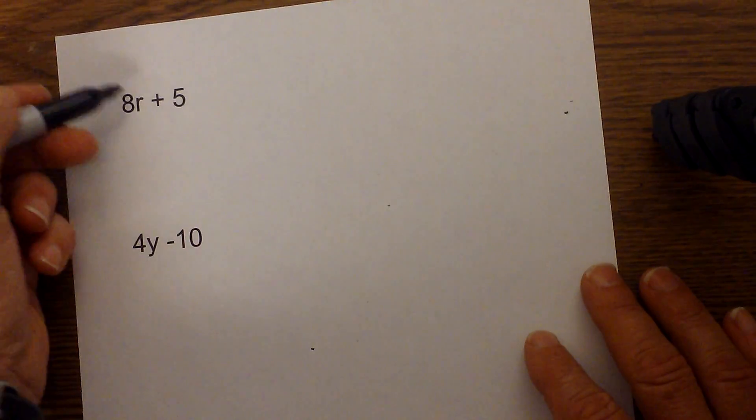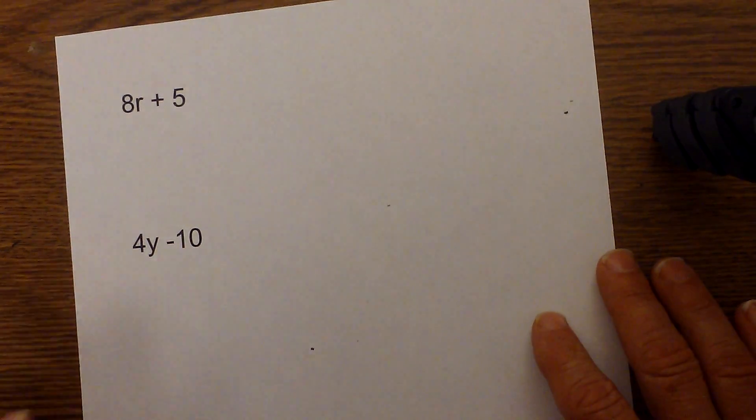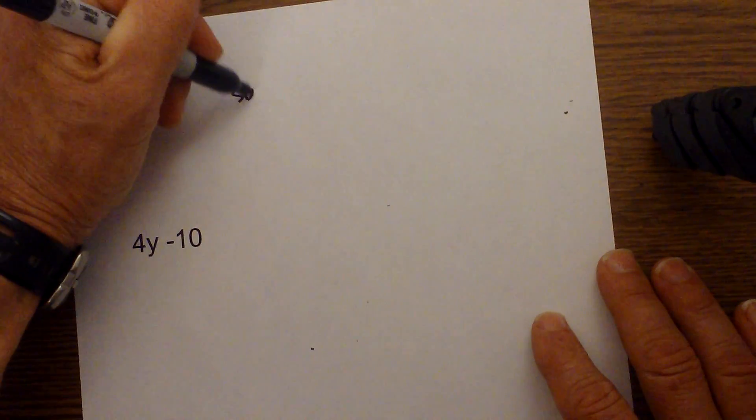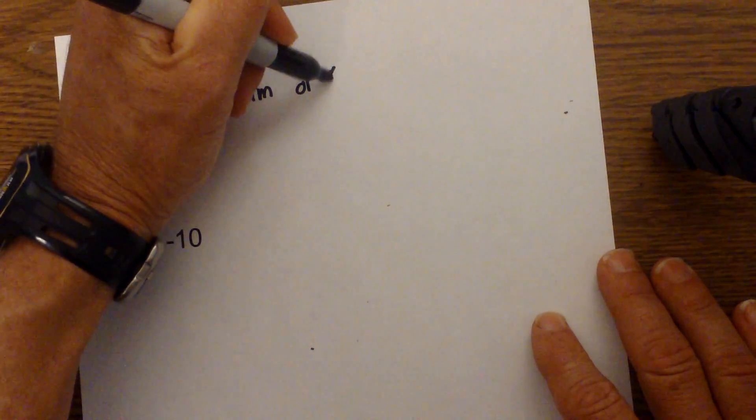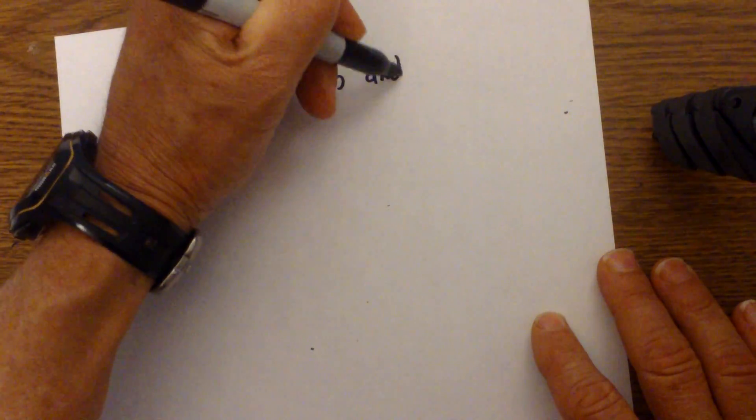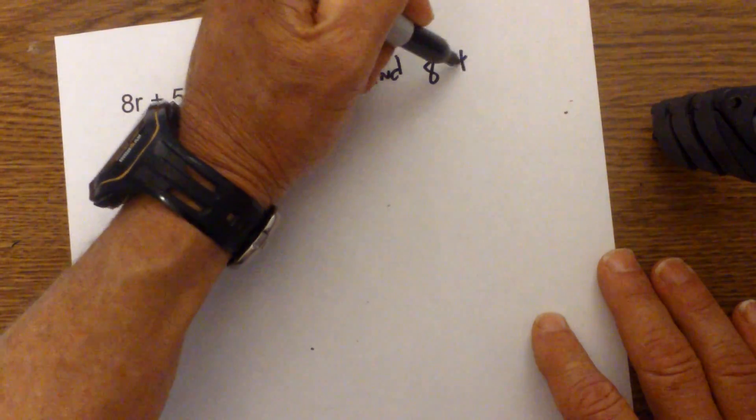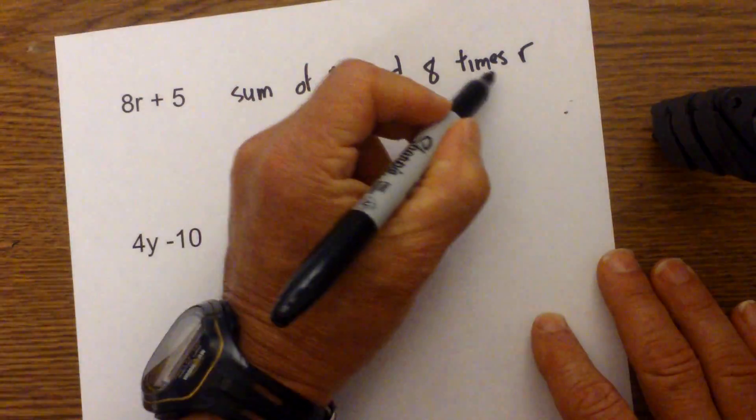And let's go with two more quickly, I think you're kind of getting the point of this. This one's a little tricky because you have multiplication, so why don't we try the sum, which tells you that we're going to add. Sum of five and eight times r.